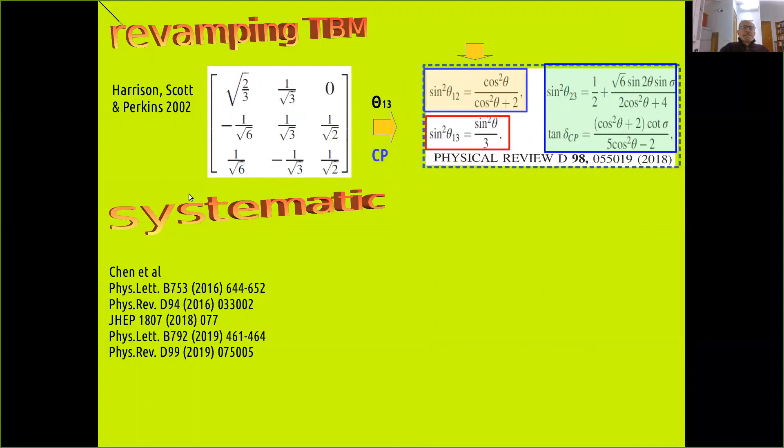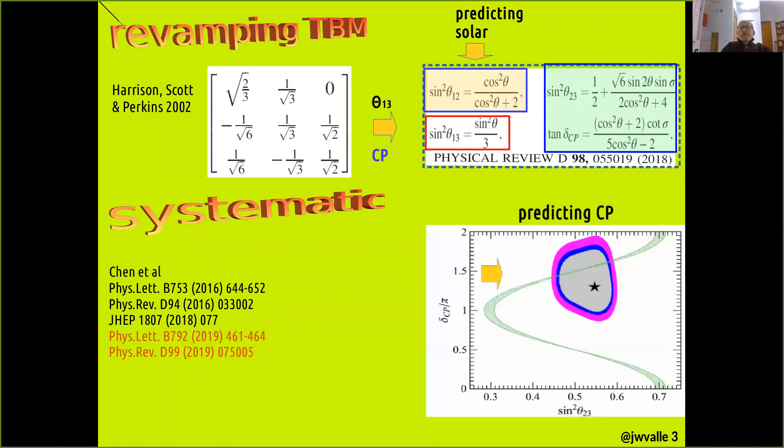Though no longer viable, this pattern can be systematically revamped by exploiting symmetries so as to produce not only viable but also predictive neutrino mixing schemes determined in terms of just two free parameters. An example of which is given here. You see the predicted region in green and how it confronts with the generic region that follows from global oscillation fits, showing that the overlap covers a very narrow range in delta CP, illustrating the predictivity.